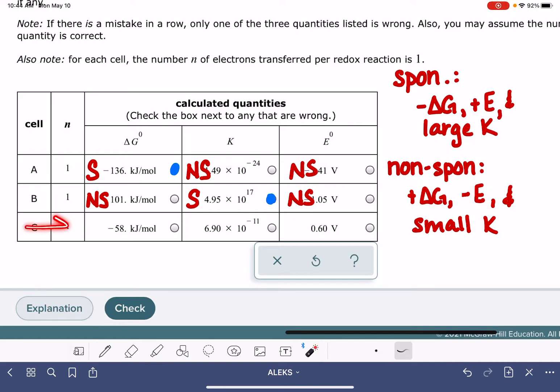And then for our last data set, C, we have a negative value of delta G. Negative delta G is spontaneous. We have a small exponent for K, so that would be non-spontaneous. We have a positive E, so that would be spontaneous. So that means that, again, K is the one that doesn't match.